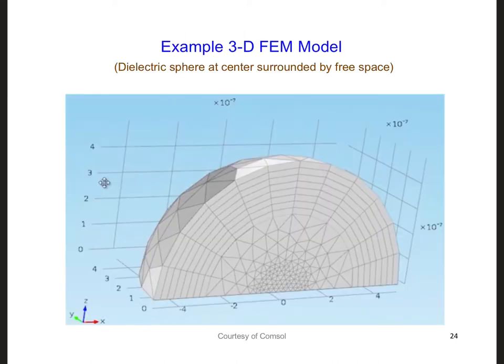We can even extend this idea to three dimensions. Here is an example FEM model having a dielectric sphere at the center, and there's free space around it. So we're only modeling half of the sphere. Since the wavelength shrinks in a dielectric, the density of the elements is higher in this dielectric sphere versus the surrounding outer region, where there's free space.